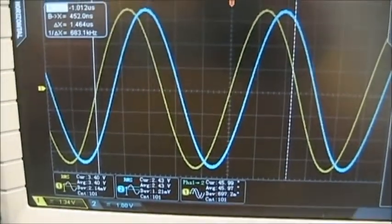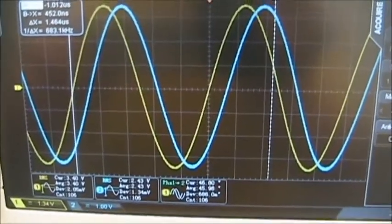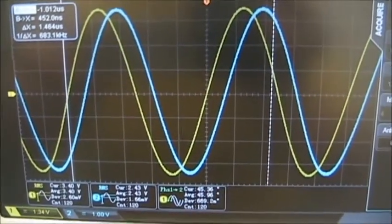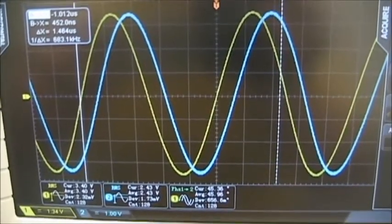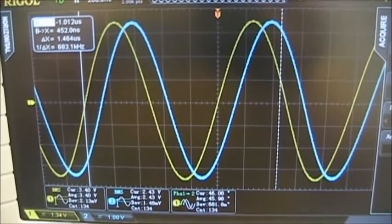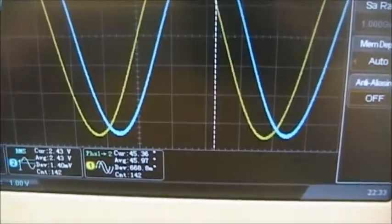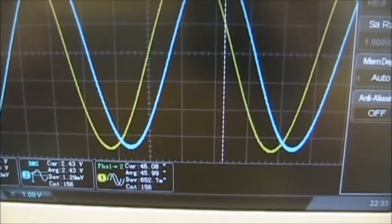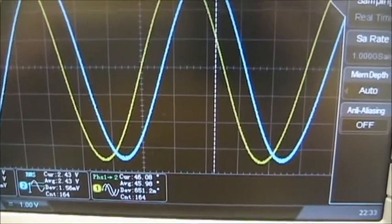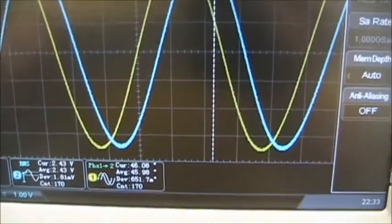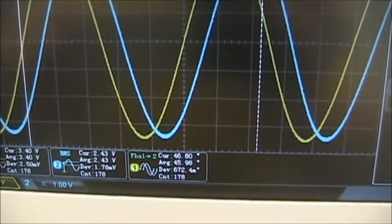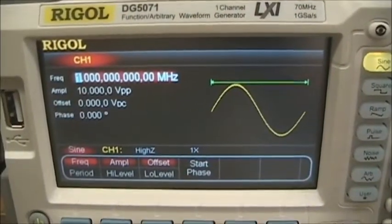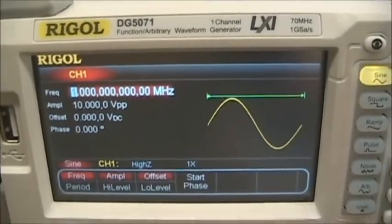If we do a few calculations for the magnitude, the output over the input, 2.43 over 3.4 gives us a value of 0.71, which is very close to 0.707. And obviously the 45 degree point is very close to the critical frequency calculation of 45.98 degrees versus 45 degrees calculated. We're slightly off on our frequency. The calculation was for 1.02, and we're at 1 MHz for simplicity.